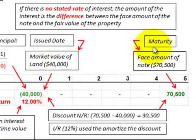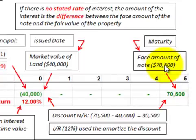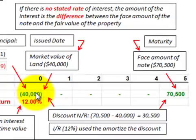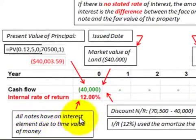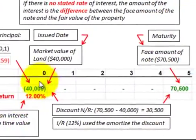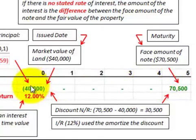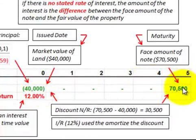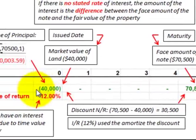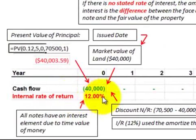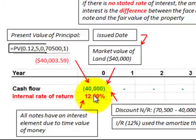At five years, at the maturity date of this note, the face amount is seventy thousand five hundred dollars. We need to determine the interest rate to impute on this note, since all notes have an interest element due to the time value of money. We have a five-year span between the land's market value of forty thousand dollars and the maturity of seventy thousand five hundred dollars, so plugging it into a calculator, we can determine the internal interest rate based on this cash flow.